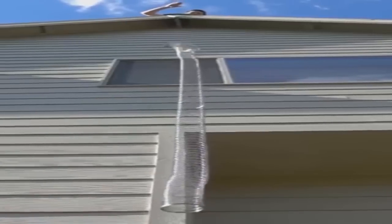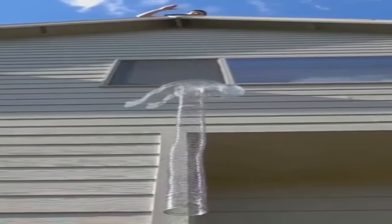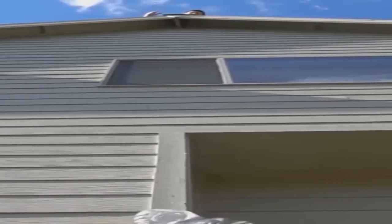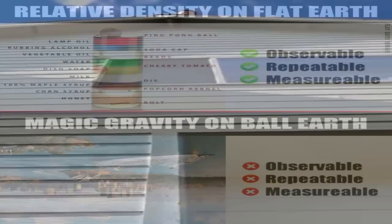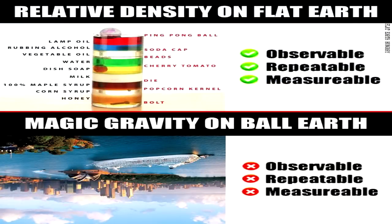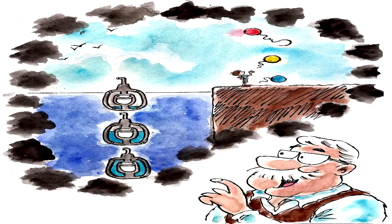As for why objects fall downwards when dropped rather than upwards or sideways: firstly, there is a pressure gradient formed by the amount of stacked air, water, and land over you in a column, which increases the pressure, weight, and density the farther down you go, and that defines direction. Secondly, helium balloons fall up, not down, proving there is no downward-directional bias.